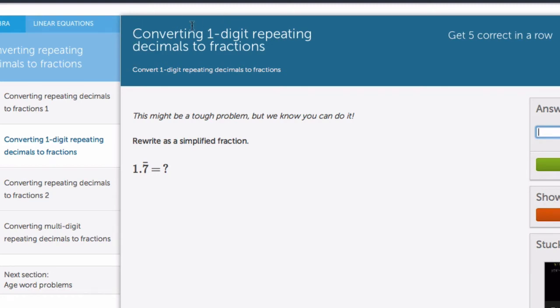Okay, in this module we're looking at converting one-digit repeating decimals to fractions. And you get stuff like this, 1.7 repeating, what's the simplified fraction? So we'll give a brief background here, and then we'll hop right to it and try these out.